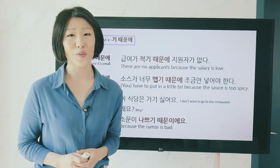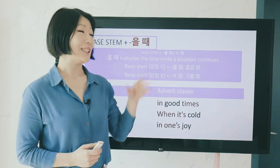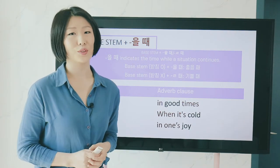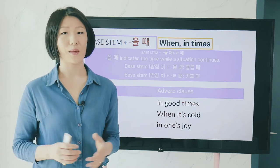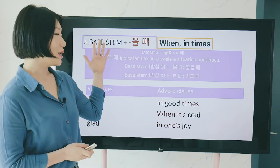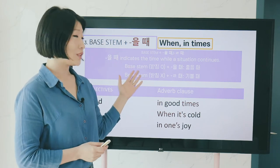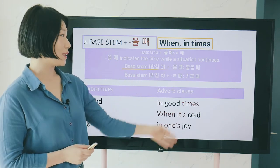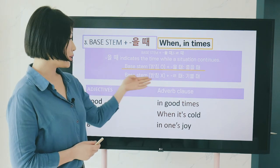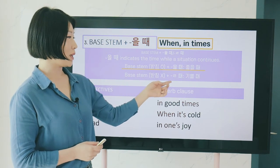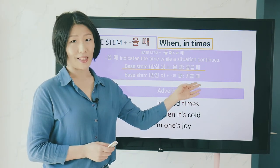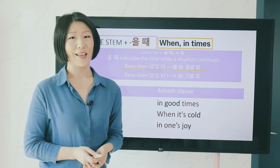Now let's move on to the last expression, which roughly corresponds to 'when' or 'in times' in English. It is combined with the base stem: if there is a 받침, attach 을 때 (like 좋을 때); if there is no 받침, attach ㄹ 때 (like 기쁠 때).